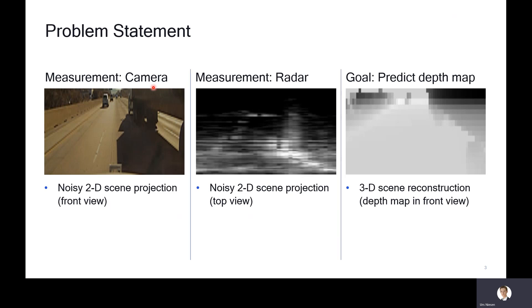The radar gives you also a 2D scene projection, but in this case it's a top view. The radar is mounted at the bottom pointing forward, and it measures on the x-axis azimuth and on the y-axis range. For example, all this white stuff at the bottom corresponds to the returns from this truck, and these white parts correspond to the returns from these cars. You can see it's fairly noisy with some spreading. The goal is to take those two measurements and produce this depth map, which gives you a front view depth map.